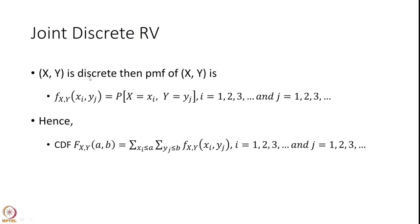If X and Y are a discrete joint random variable, then the probability mass function is defined as the probability that X takes value xi and Y takes value yj, where i and j each vary from 1 onwards. The CDF of the discrete joint random variable (X, Y) at (a, b) is defined as the summation over all xi less than a and all yj less than b of f_XY, the joint probability mass function.